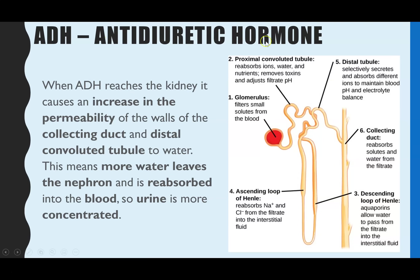The role of ADH — anti-diuretic hormone — is that when it reaches the kidney, it causes the walls of the collecting duct and the distal convoluted tubule to become more permeable to water. The distal convoluted tubule is section 5 and the collecting duct is section 6 on the diagram. More permeable walls mean more water leaves the nephron and is reabsorbed into the blood, resulting in more concentrated urine.